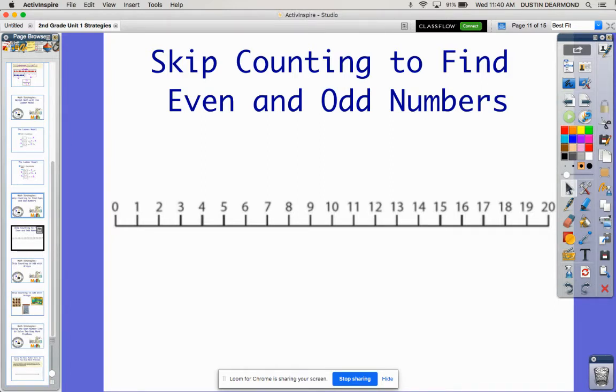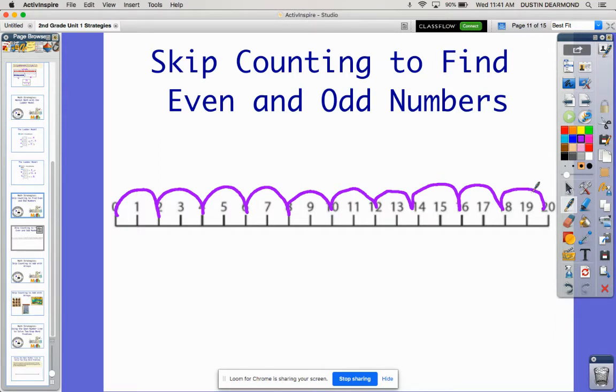So if I'm starting at zero and I skip count by twos, then all of those numbers are going to be my even numbers. So I'm going to get my pen in here and show you that if I jump 2, 4, 6, 8, 10, 12, 14, 16, 18, 20. All those numbers I landed on are my even numbers.